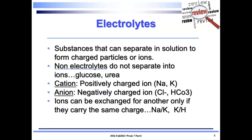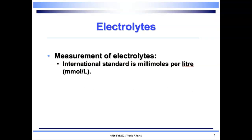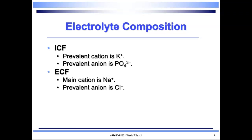Electrolytes are substances that can separate in solution to form charged particles or ions. Non-electrolytes, such as glucose and urea, do not separate into ions. A cation is a positively charged ion — potassium and sodium. An anion is a negatively charged ion — chloride and bicarbonate. Ions can be exchanged for one another if they carry the same charge, as seen with the sodium-potassium pump and potassium-hydrogen ion exchange in acid-base balance. Electrolytes are measured in millimoles per liter. In the intracellular fluid, the prevalent cation is potassium and the prevalent anion is phosphate; in the extracellular fluid, the main cation is sodium and the prevalent anion is chloride.